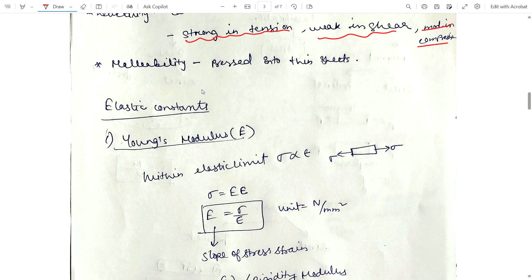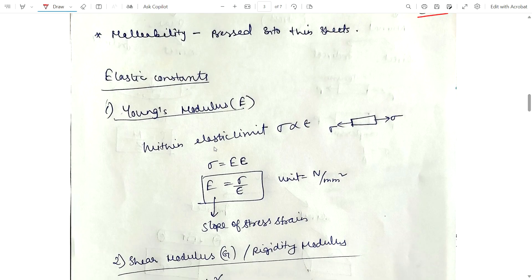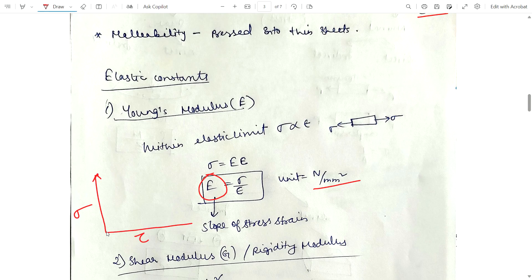Now, elastic constants. Young's modulus, shear modulus — these are elastic constants. Within the elastic limit, stress is directly proportional to strain. Removing the proportionality constant, stress equals Young's modulus into strain. Young's modulus E equals stress divided by strain; the unit is Newton per meter square. Young's modulus represents the slope of the stress-strain curve.